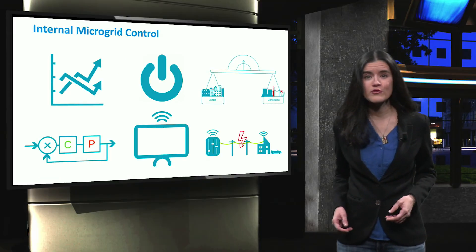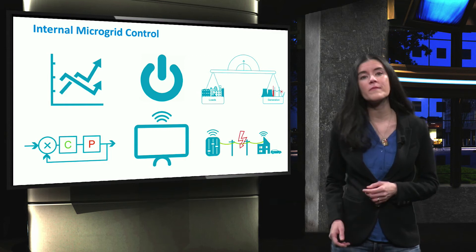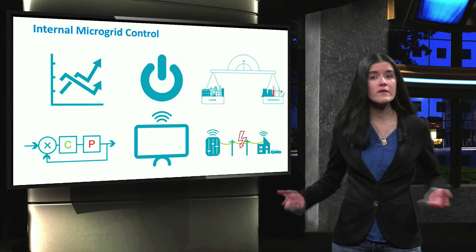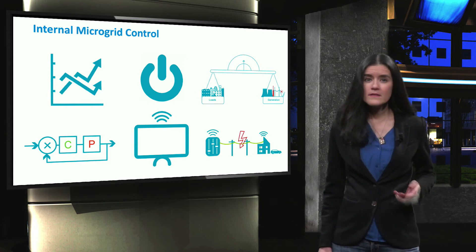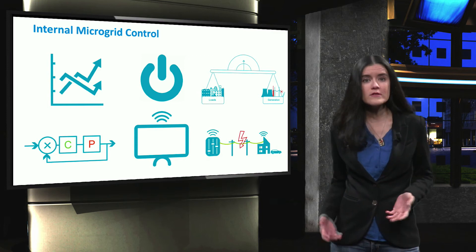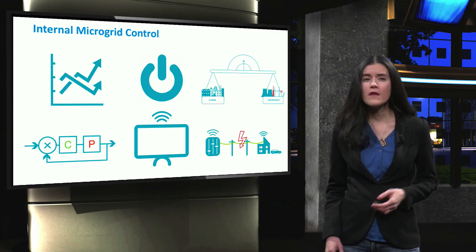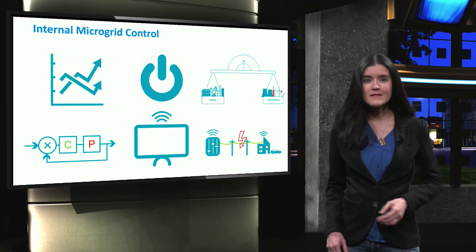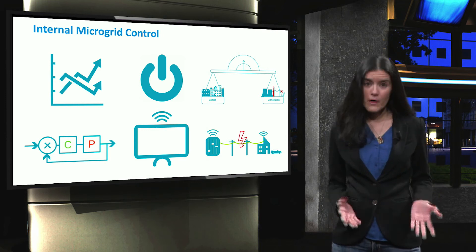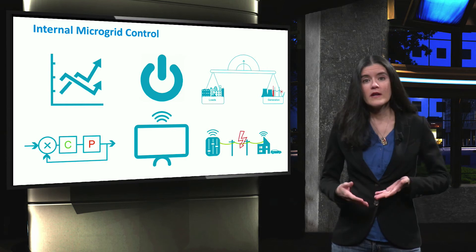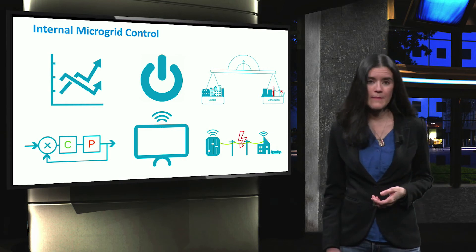In a centralized approach, a central microgrid controller is in charge of performing the different control and optimization actions. The central controller is connected to the different feeders that form the microgrid. The optimization of a microgrid takes into account several factors such as market prices for electricity and gas, grid security, and local production capabilities.